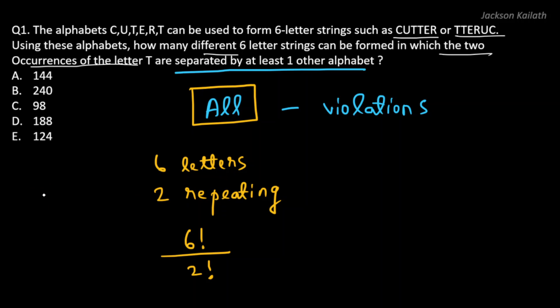Now if you have n different letters, then the number of arrangements that can be formed would be n factorial. Now if out of these n, there are two letters repeating and another three letters repeating, like for example you have A, A, B, B, B, and then C and D.